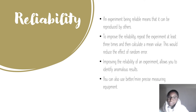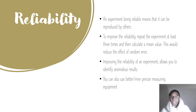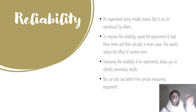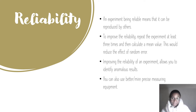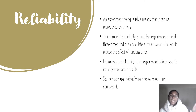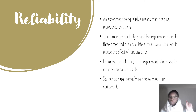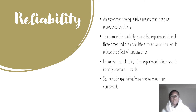Improving the reliability of an experiment also allows you to identify anomalous results. If a question asks how to improve reliability and requires two points: the first is repeat to calculate a mean, and the second is so that you can identify anomalous results. Write those two down and you'll get two marks. You can also use more precise measuring equipment, but repeating to find the mean and identifying anomalous results should be the top ones you remember.